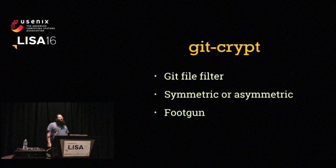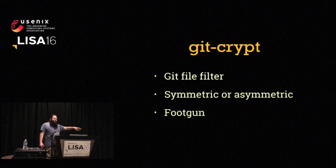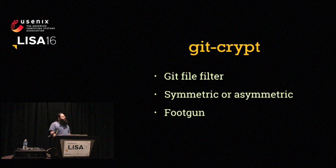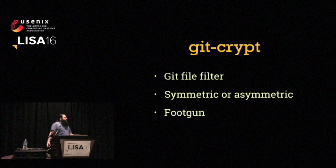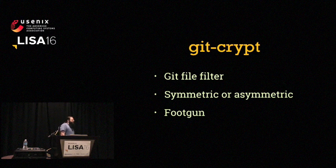A lot of people want to put secrets in Git because it's convenient but know they shouldn't put them in the clear, so they try encrypting. GitCrypt is probably the best of those tools — it supports both symmetric and asymmetric operations — but it's still not a great idea for a lot of the same reasons. Principle of least access is more doable via pre-encryption, but audit logs are still non-existent. Also, with GitCrypt you usually have to specifically mark files as desired to be encrypted, meaning if you ever forget one, you may push stuff to Git in the clear.